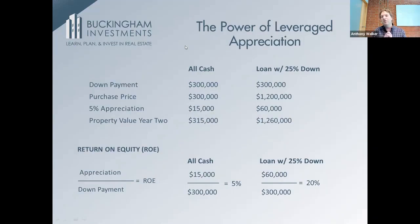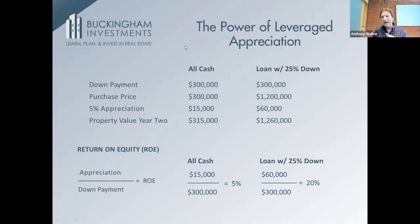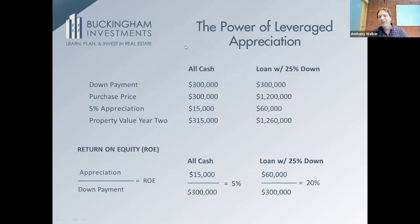The basic idea behind leveraged appreciation is that most people buy with some of your own money down and a lot of somebody else's money — OPM, other people's money, usually from a bank — to buy an asset. As the asset appreciates in value, the increase in value all goes to the investor. The lender doesn't get to participate in that; you only owe the lender the loan. Mathematically expressed, it's leveraged appreciation, and it multiplies your return on equity from appreciation.